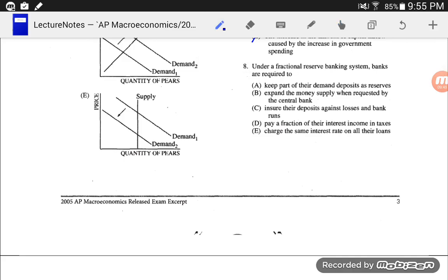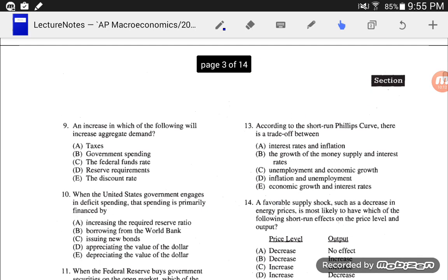Number 8, under our fractional reserve banking systems, banks are required to... This is that whole reserve ratio. That means they are required to keep some of that money on hand. They aren't required to do any of these other things. Fractional reserve system is what we have. It just means banks keep a fraction of the money that gets deposited on hand.